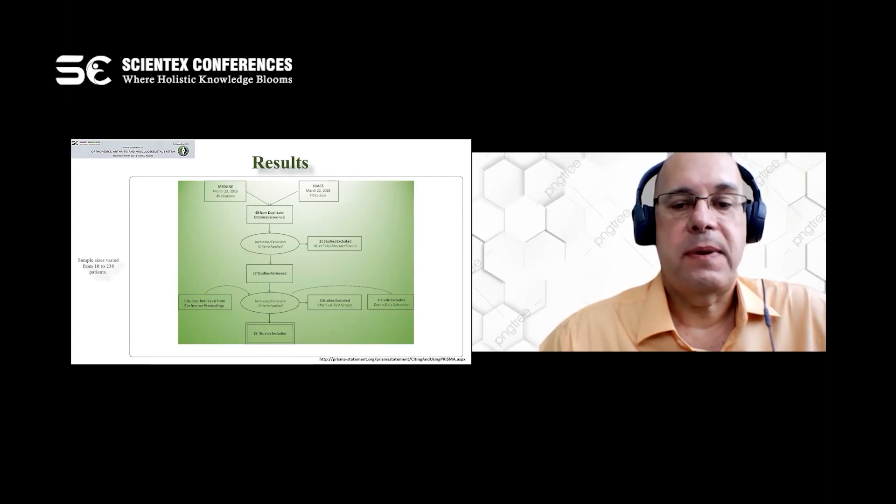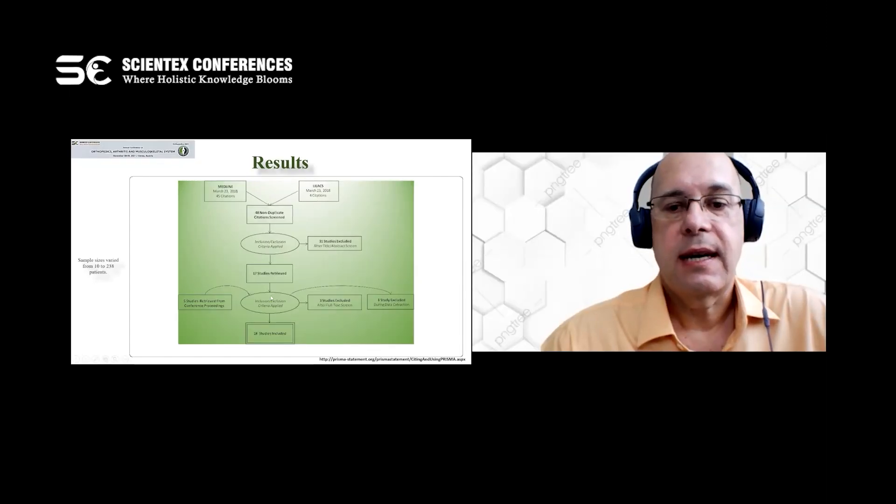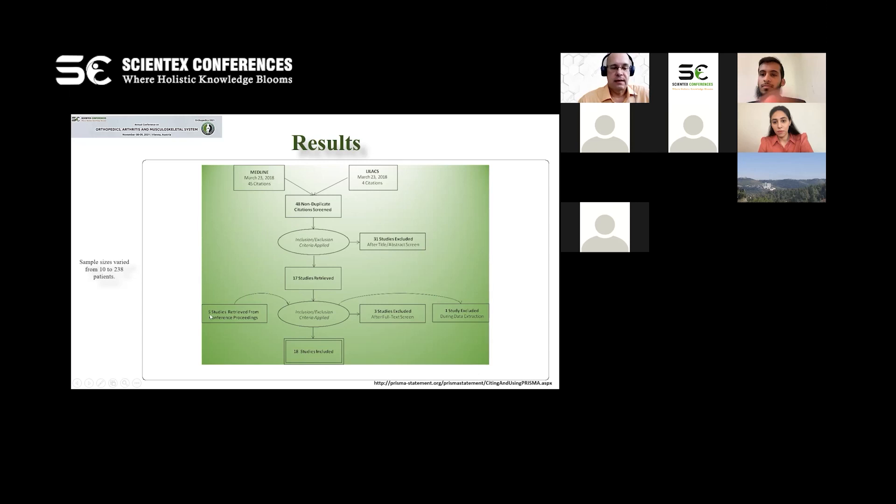The PRISMA flow chart: in results detected 45 citations in Medline and 4 citations in LILACS. The studies included 18 studies. Sample size varied from 10 to 130 patients.